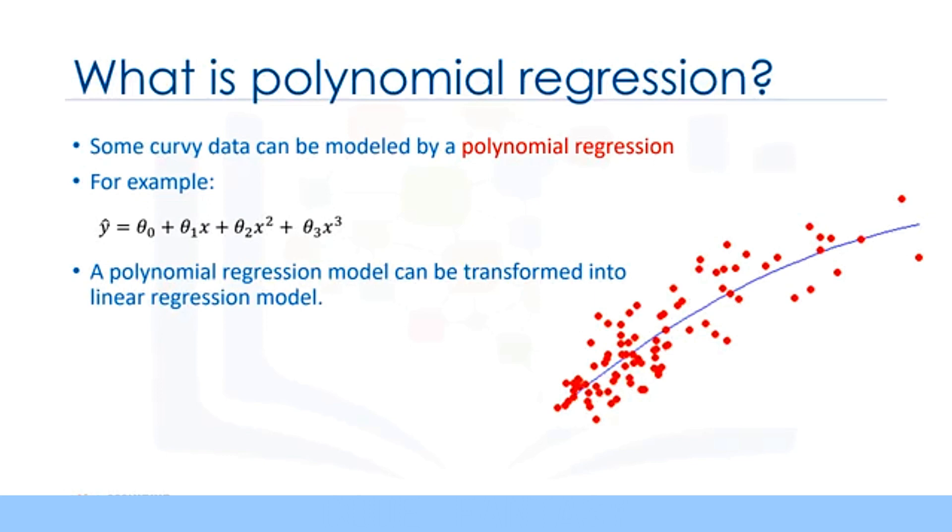Given the third-degree polynomial equation, by defining X1 equals X and X2 equals X squared and so on, the model is converted to a simple linear regression with new variables as y hat equals theta zero plus theta one X one plus theta two X two plus theta three X three. This model is linear in the parameters to be estimated, right?